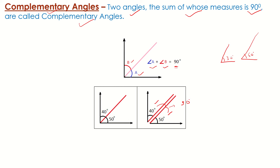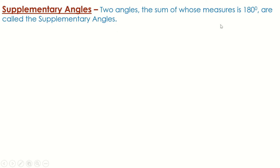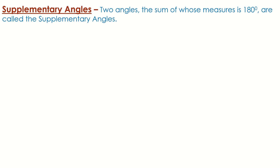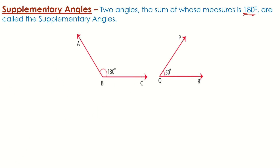We can form many complementary angles by making their sum equal to 90 degrees. Next are supplementary angles — angles whose sum is equal to 180 degrees are called supplementary angles. For example, we have two angles: 130 degrees and 50 degrees, and their sum is equal to 180 degrees. So we can say that angle ABC and angle PQR are supplementary angles.